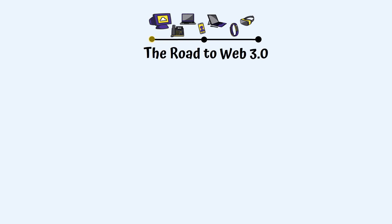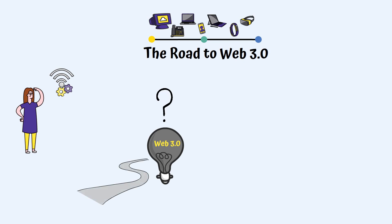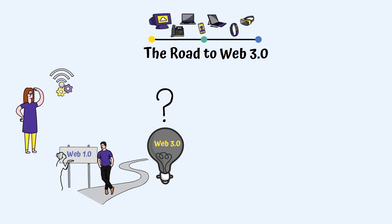The Road to Web 3.0: if you never stop to think about how the internet works and how it evolved in time, it is possible that what Web 3.0 means could be a bit of a fuzzy concept. The Road to Web 3.0 begins with Web 1.0, and our interaction with the internet and how it evolved can be compared to how a romantic relationship goes.